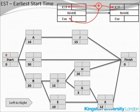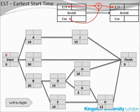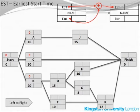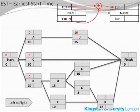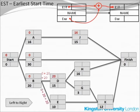For every other activity, the recipe is: take the EST of any activity, add the duration of this activity, and you'll get the earliest start time of the next activity. From the start node: zero plus zero gives EST of zero for activities A, B, and C. Activity A: EST of zero plus duration of 16 makes the earliest start time for activity J equal to 16. Activity B: earliest start time zero plus duration of 20 gives earliest start time for activity D equal to 20. A similar calculation may be done for activity E.